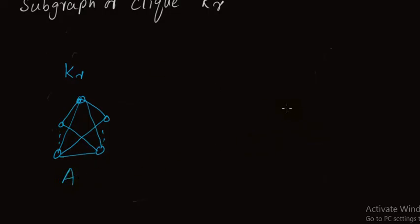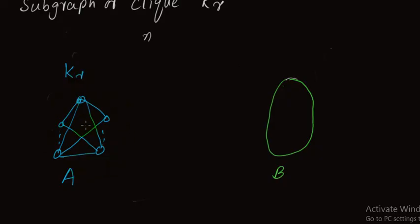We call this complete subgraph set A. We then choose another set B. Since there are n vertices total and set A (the clique Kr) contains r vertices, we are left with n−r vertices in set B. So the order of set B is n−r.